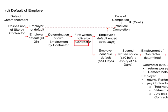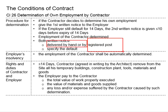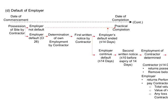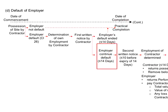When the employer is in default, the contractor will need to send the first written notice to the employer, delivered by hand or by registered post, clearly specifying the default. This serves as a warning to the employer to see whether the employer will rectify the situation. If the employer is eager to rectify it, the employer is no longer in default and cooperates with the contractor, and work shall proceed normally until practical completion.